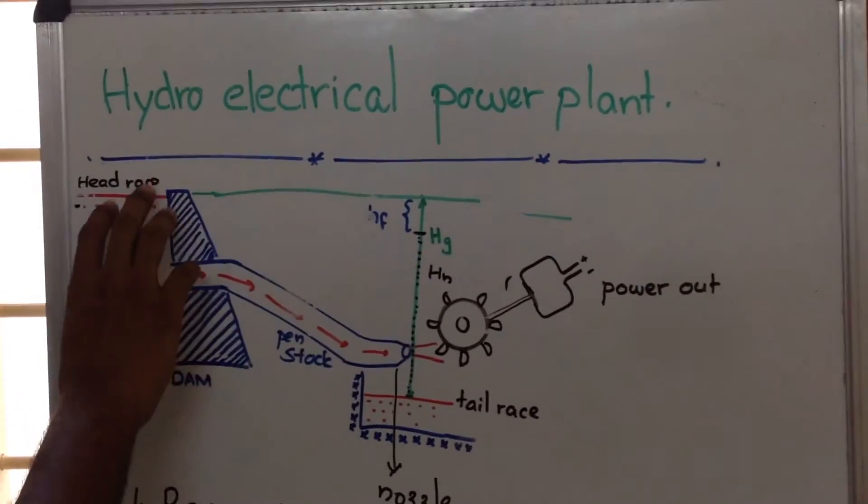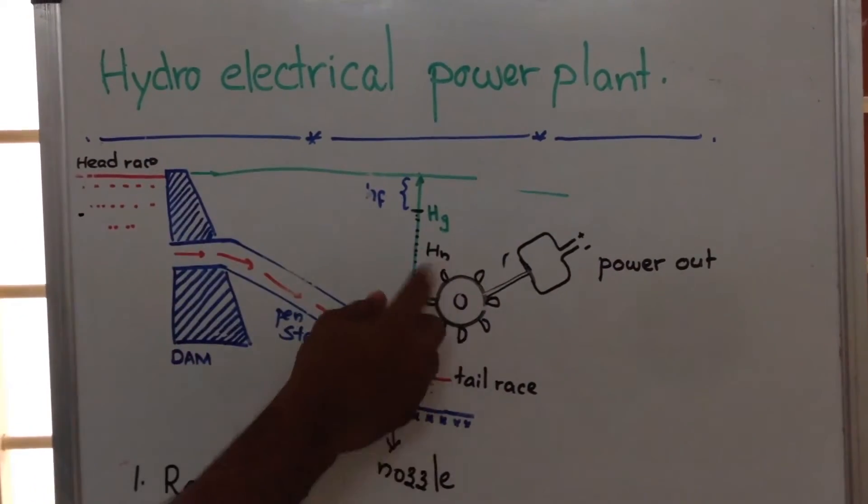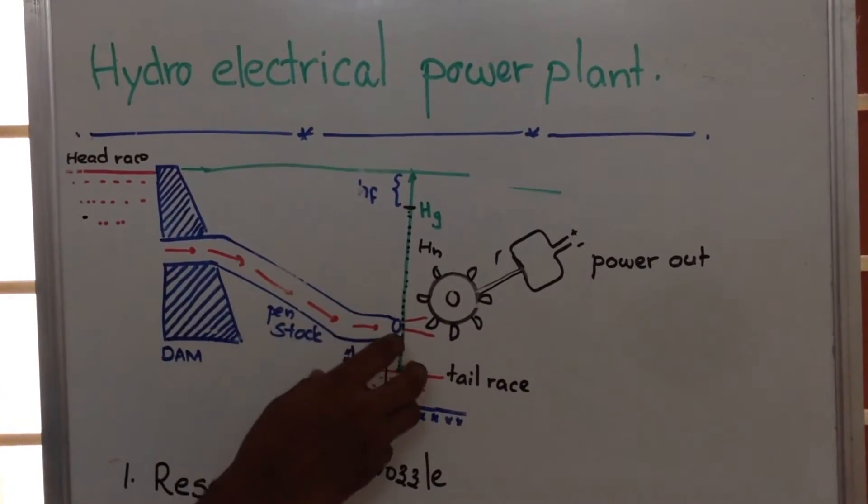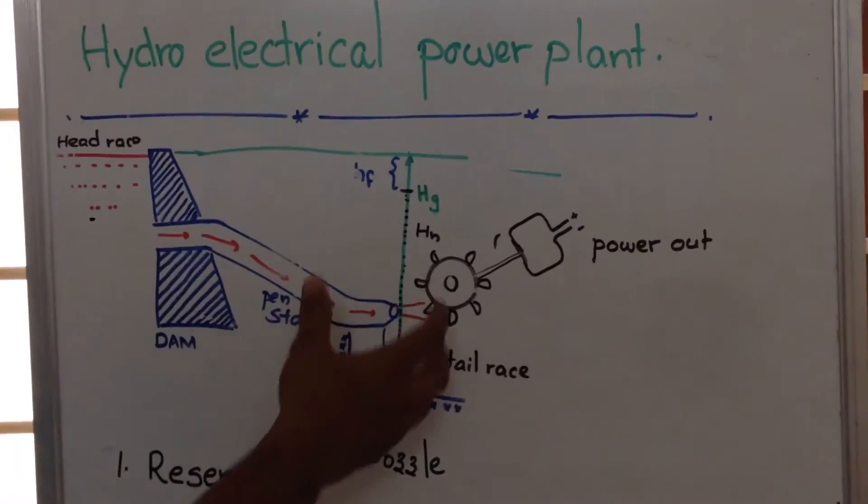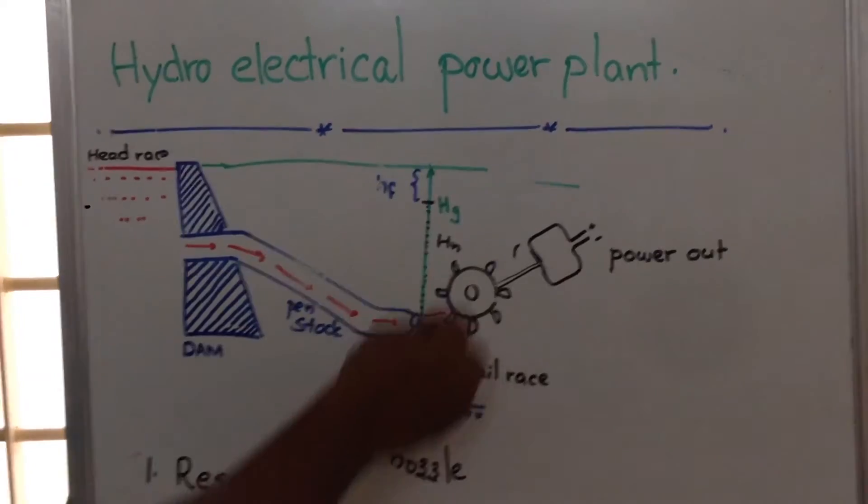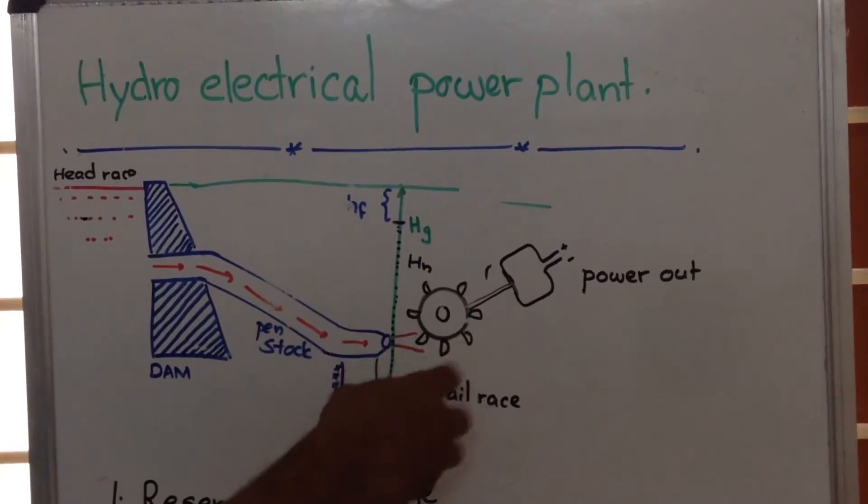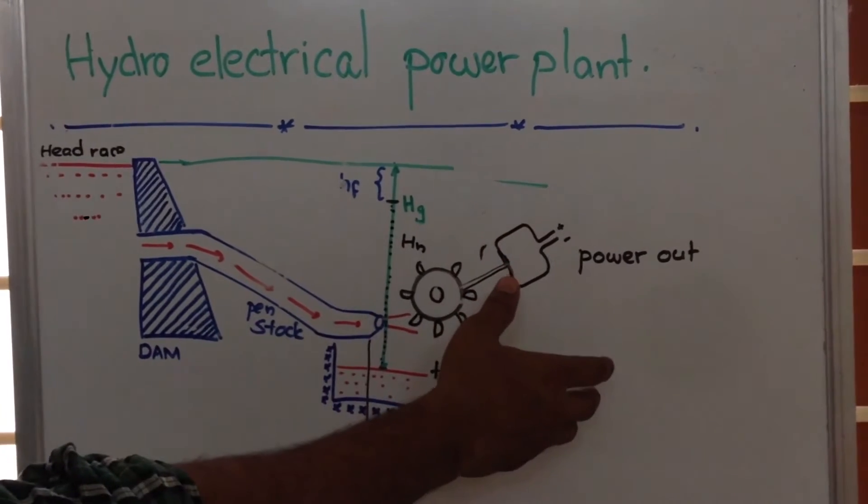Water is stored in the reservoir and then moves through the penstock. As it reaches the turbine, the potential energy of the water is changed into kinetic energy, which is used to run the turbine. The turbine's function is to convert mechanical energy into electrical energy.